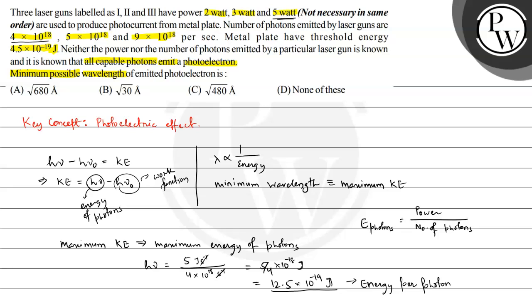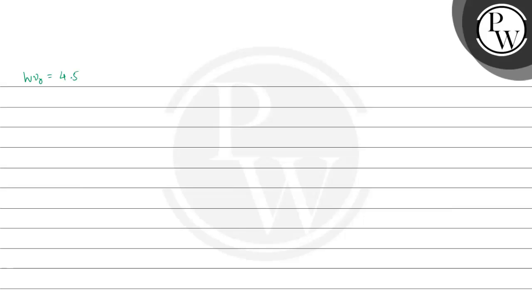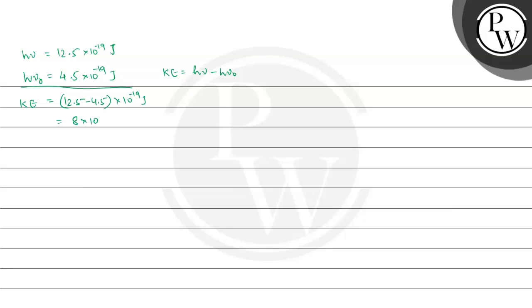So hν = 12.5×10⁻¹⁹ J. We can now calculate kinetic energy: KE = hν − hν₀ = 12.5 − 4.5 = 8, so KE = 8×10⁻¹⁹ joules.